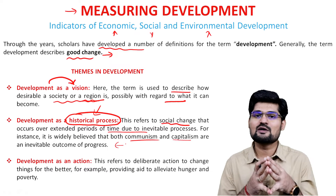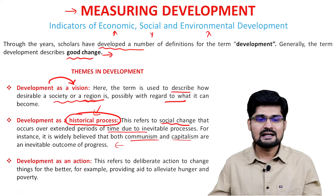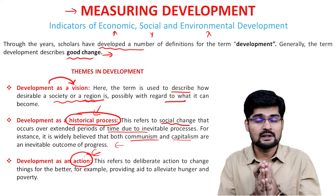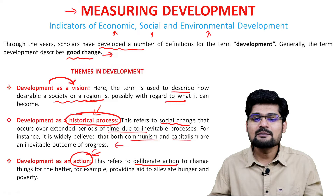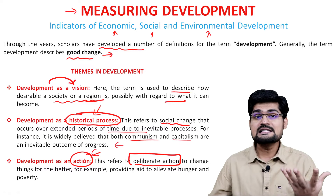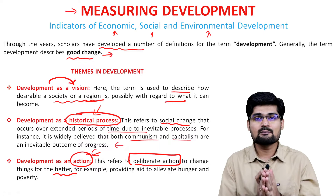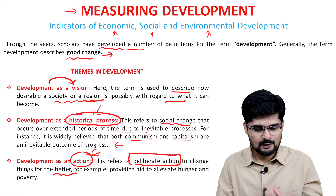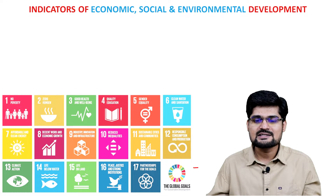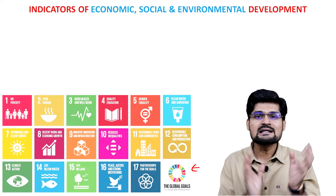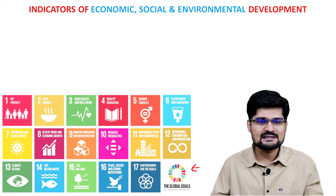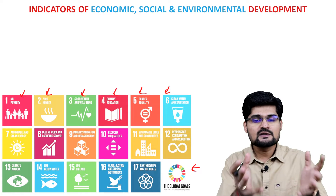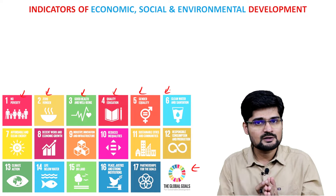The third development theme is development as an action — practical, pragmatic, and action-oriented. It refers to deliberate action in order to bring change for betterment, for example poverty alleviation programs, improving hunger, education, and so on. To address these things, we already have an agenda: Agenda 2030 Sustainable Development Goals. These SDGs are based on action plans — we need to cover these 17 goals and visualize our future on that basis.